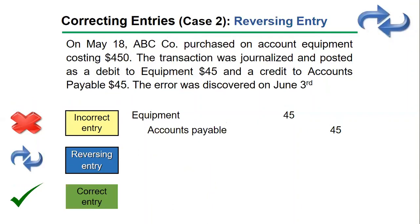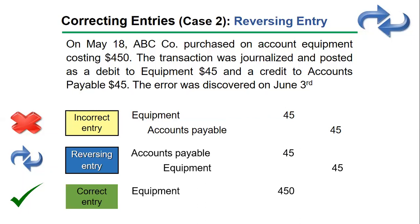To reverse the entry — you can also pause the video and test your knowledge — in order to reverse it, I eliminate the whole effect of the incorrect entry: equipment credit $45 and accounts payable debit $45. Then I record the correct entry: equipment debit $450 and accounts payable credit $450.